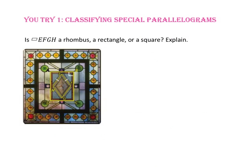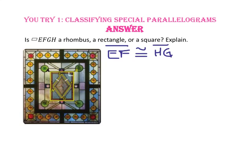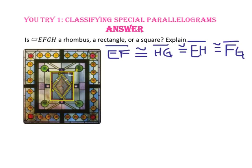Pause the video and do you-try number 1. We know that parallelograms have opposite sides that are congruent. Since side EF is opposite side HG, we know they are congruent. From the diagram, segment EH is congruent to segment EF, and since opposite sides of parallelograms are congruent, segment FG is also congruent to segment EH. Since all four sides of the parallelogram are congruent, our parallelogram is a rhombus.